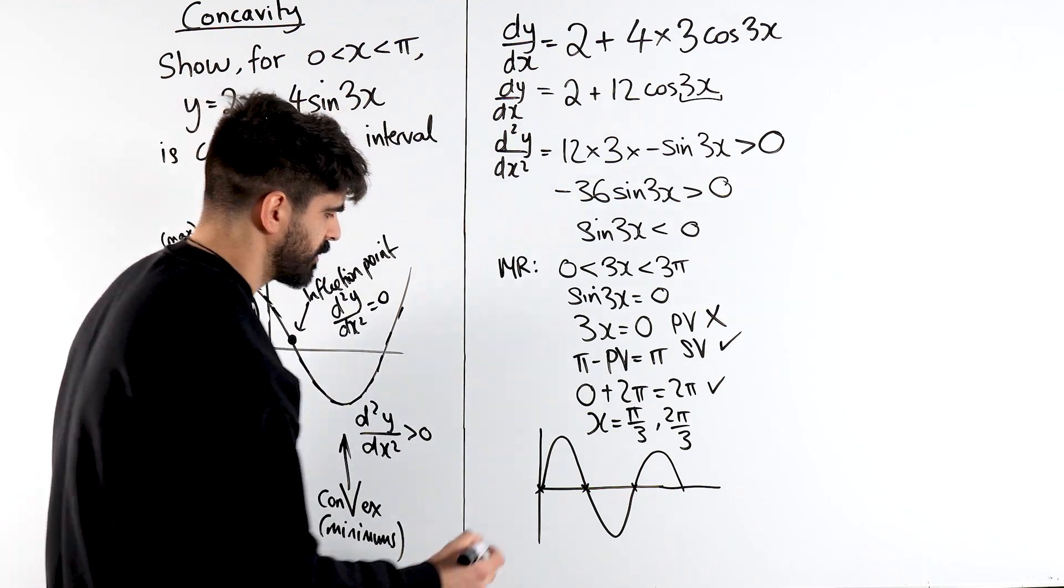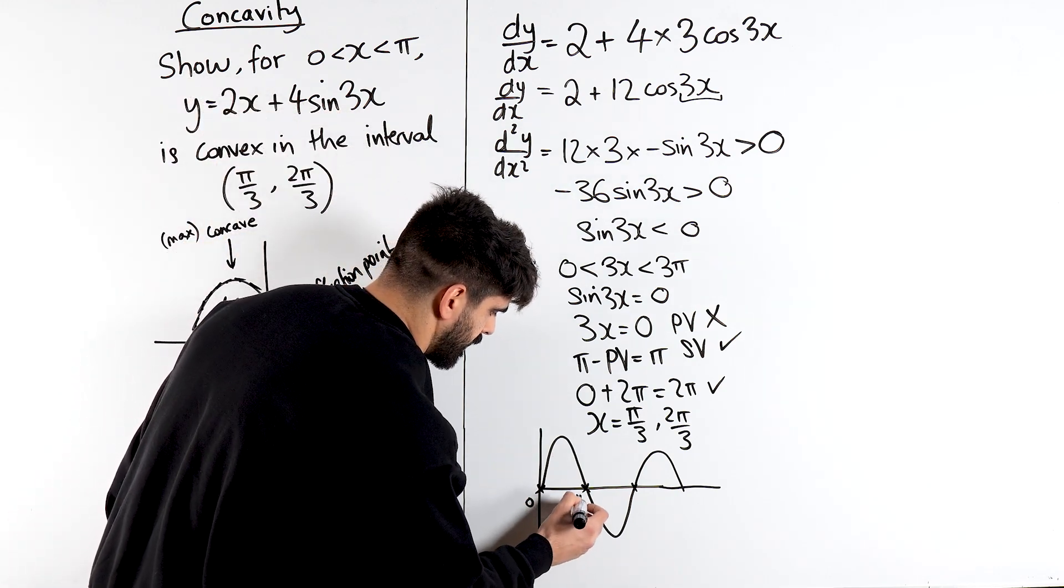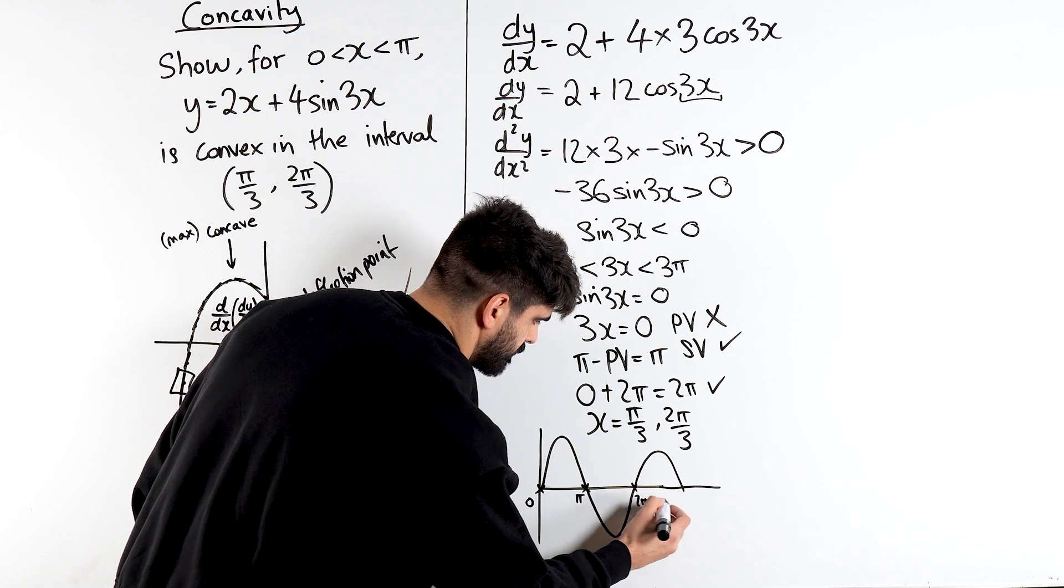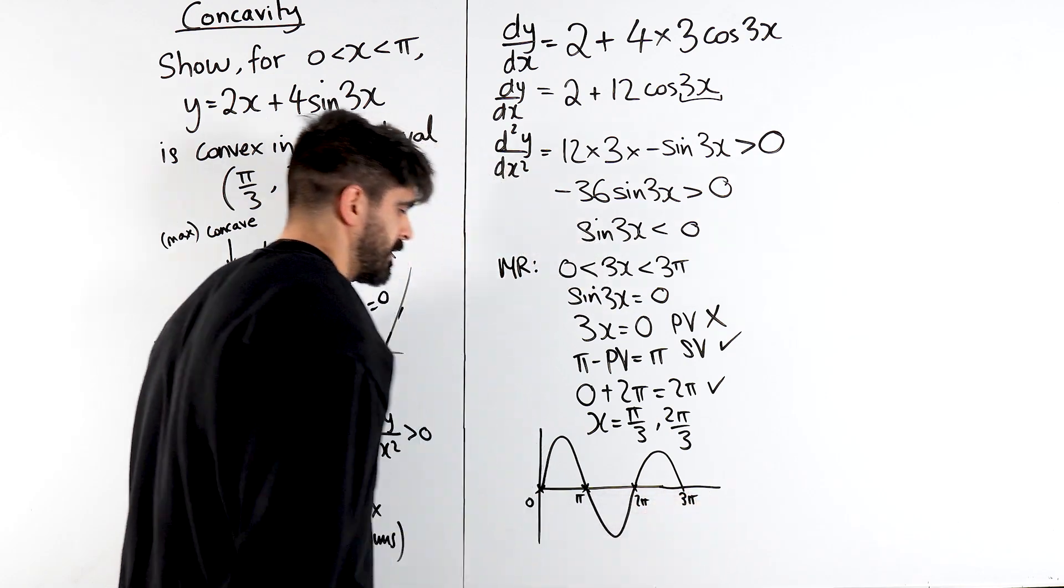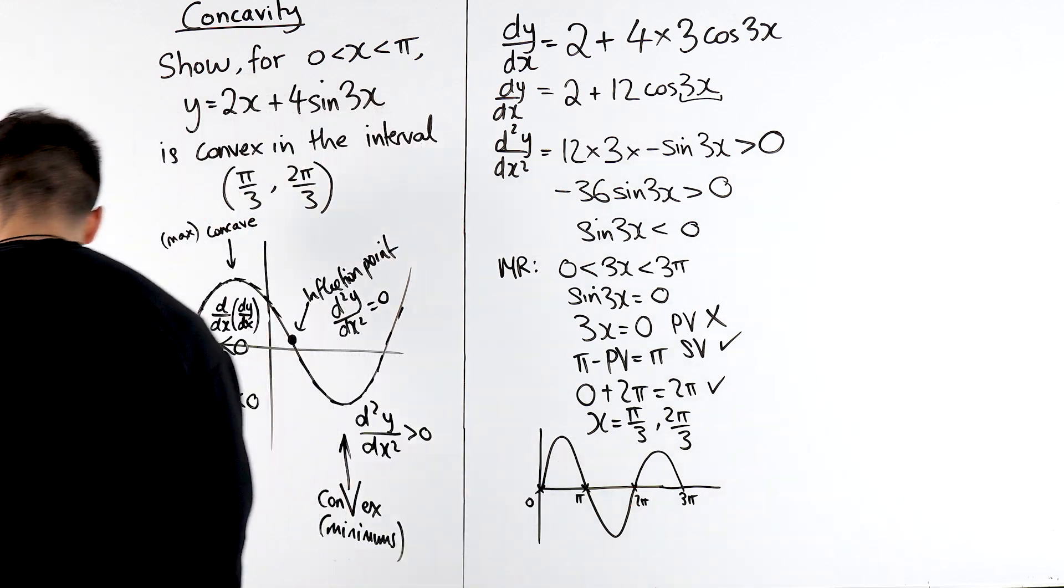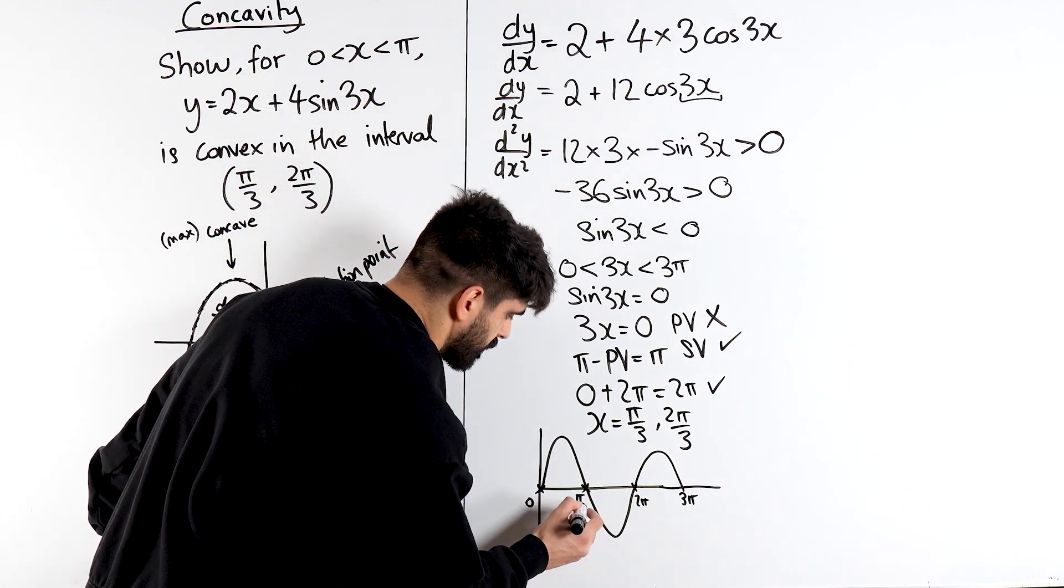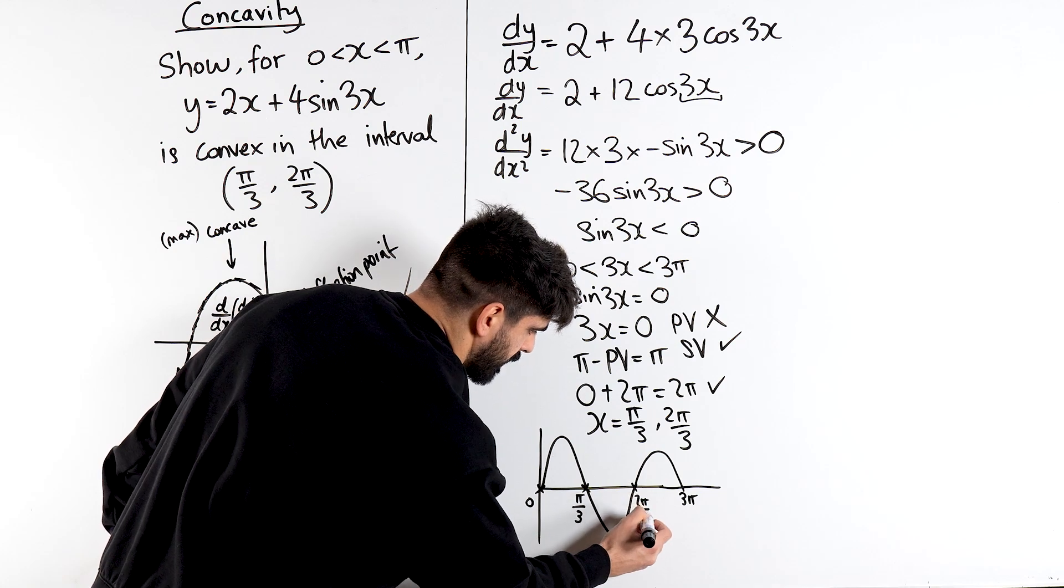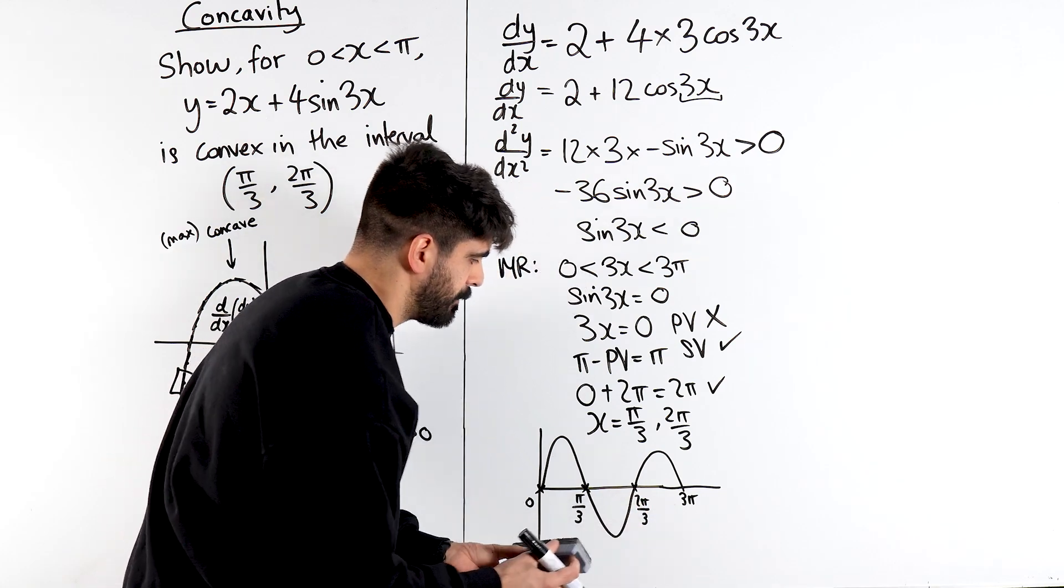So we have 0, π, 2π, 3π. And then when we divide all of this by 3, when we divide all this by 3, I'm just going to do it here. We're going to get π/3, 2π/3, and here we're just going to get π.